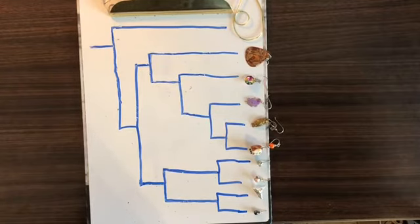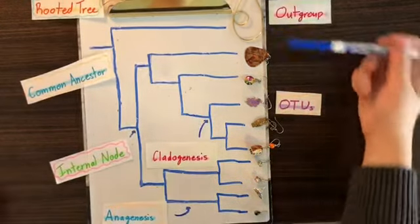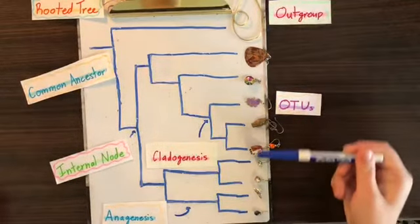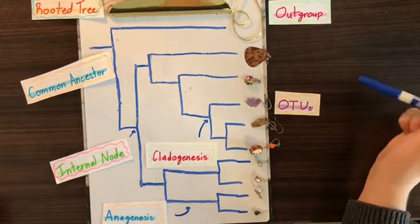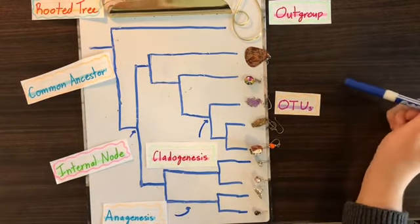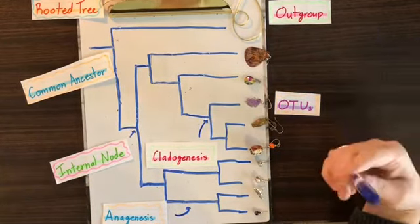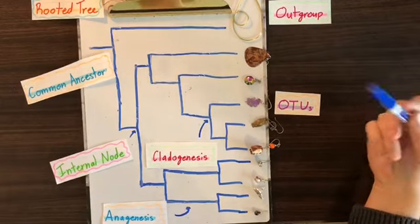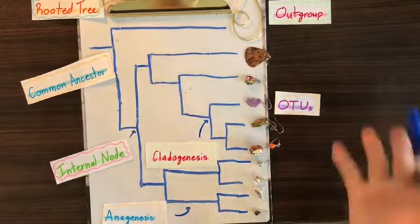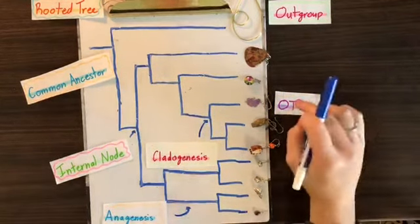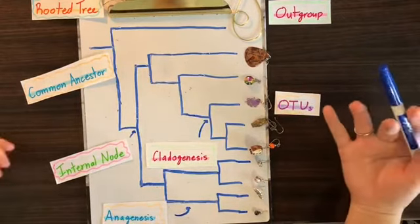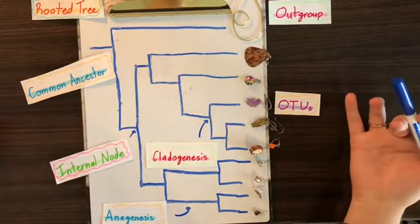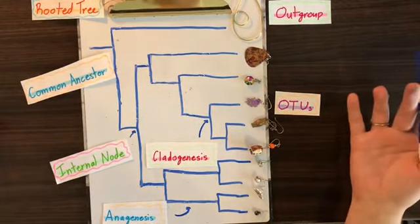Now let me walk you through it and I'll talk about some terms that you might need to know. So our earrings all down this row are going to be considered our OTUs, or operational taxonomic units. OTUs are units that we analyze and separate into a phylogenetic tree based on how long it takes for them to diverge. They can be anything from species to strains of a virus to different alleles on a gene.